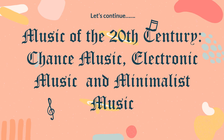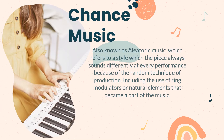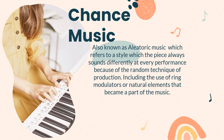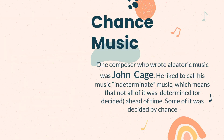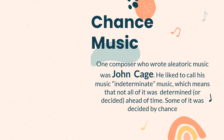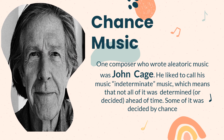Now let's continue to the music of the 20th Century. We have chance music, electronic music, and minimalist music. Chance music, also known as aleatoric music, refers to a style which the piece always sounds differently at every performance because of the random technique of production. It includes the use of ring modulators or natural elements that become part of the music. Most of the sounds emanate from the surroundings, both natural and manmade. Chance music is being popularized by John Cage, who liked to call his music indeterminate music, which means that not all of it was determined or decided ahead of time — some of it was decided by chance. That's why it is called chance music.